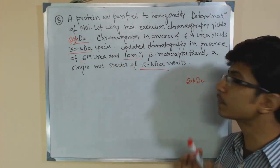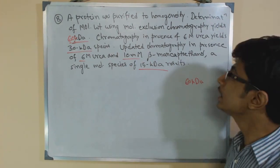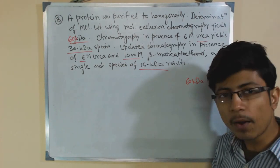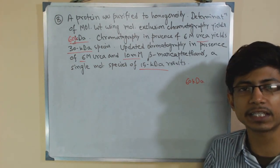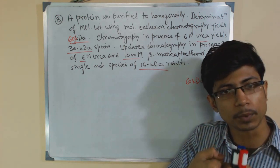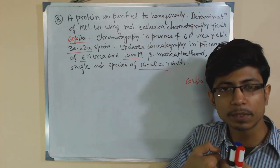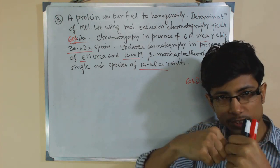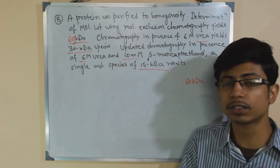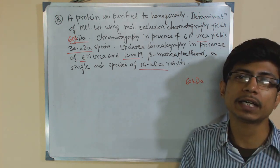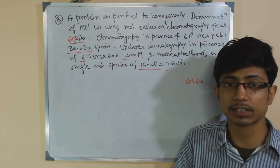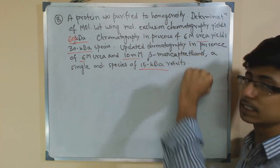After that, chromatography in presence of 6 molar urea — you know what urea does to protein: it actually denatures it. Urea uses the same process as heat to denature the protein, meaning it disrupts the hydrophobic core structure. After disrupting the hydrophobic core, the protein structure becomes linear and soluble in solution. It separates all the side chains to get a linear peptide — that is what urea does.